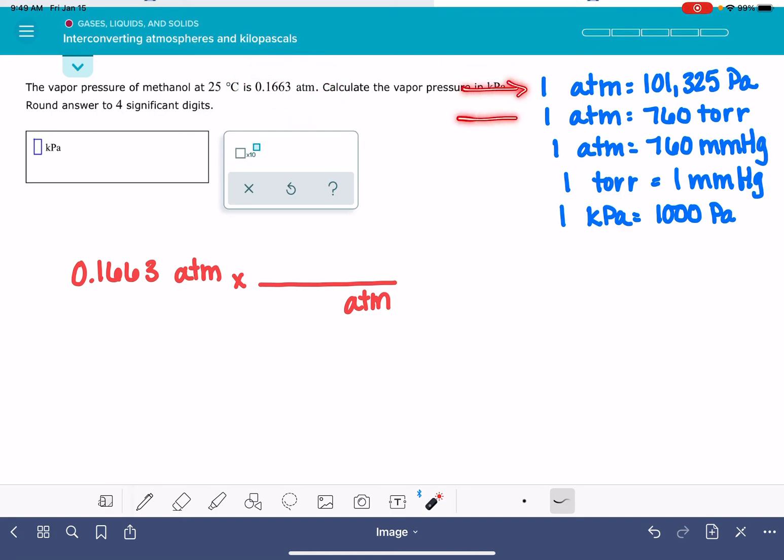So let's take a look at all of the different conversion factors that we have. The one that looks the best is atmospheres to pascals. That's not exactly what we're looking for, but we do have a relationship between pascals and kilopascals, so this would be the best step for us to take. One atmosphere is 101,325 pascals.